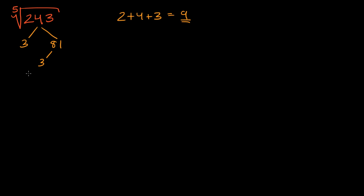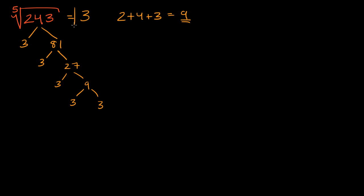Continuing the factoring: 81 is three times 27, which is three times nine, which is three times three. So using the factoring method, we can see that three to the fifth power is 243. Therefore, the fifth root of 243 is equal to three.